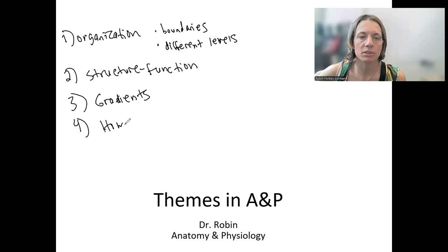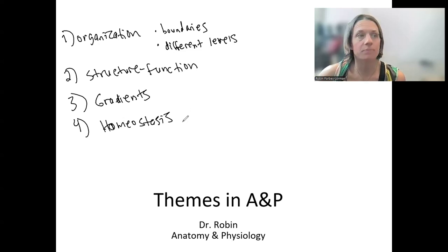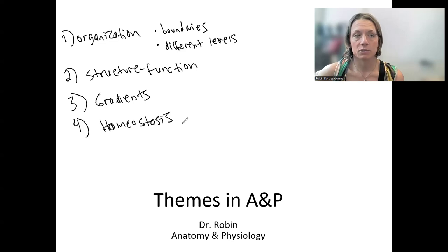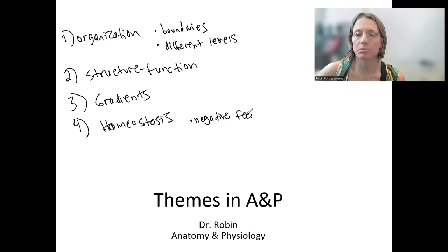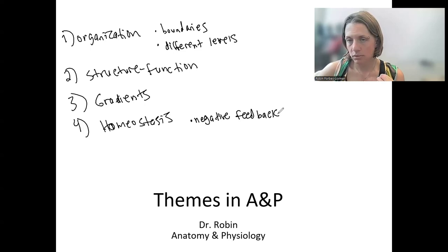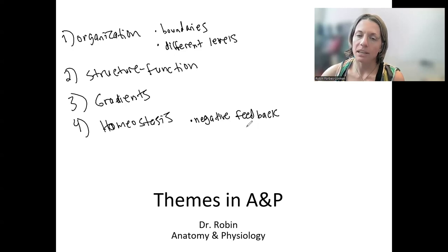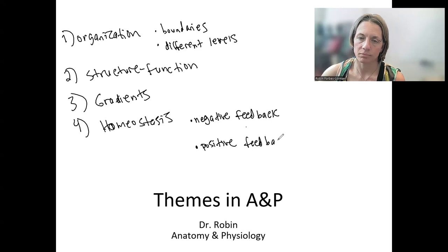And four is homeostasis, which I've already mentioned a few times. This is maintaining a stable internal environment — some narrow range of functioning that allows for life to happen. This is going to use negative feedback. Negative feedback is a process that allows us to maintain homeostasis. When we talk about negative feedback, we will also talk about positive feedback, but it is not directly involved in maintaining homeostasis. Negative feedback maintains homeostasis.